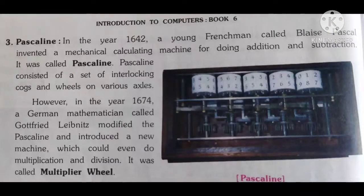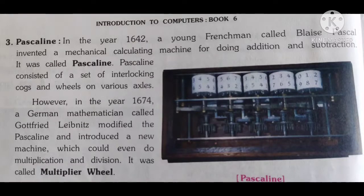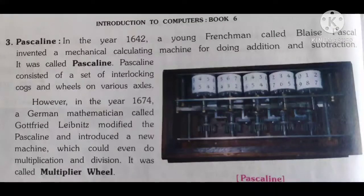In the year 1674, a German mathematician called Gottfried Leibniz modified the Pascaline and introduced a new machine which could even do multiplication and division.